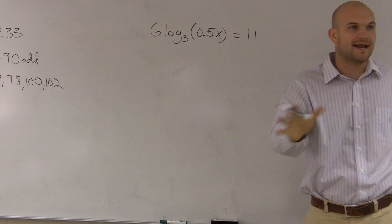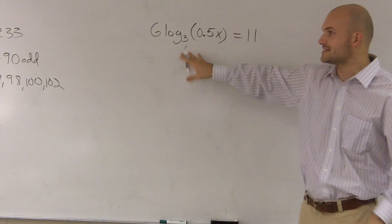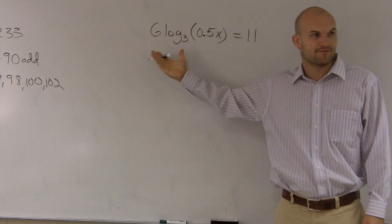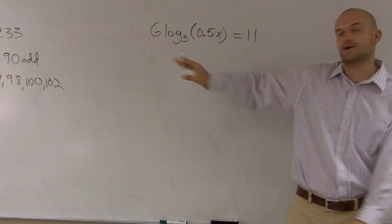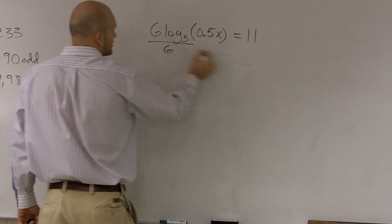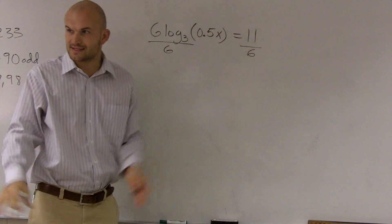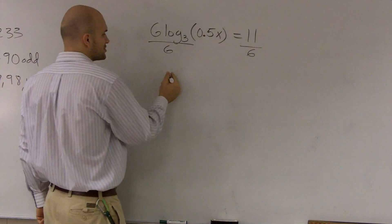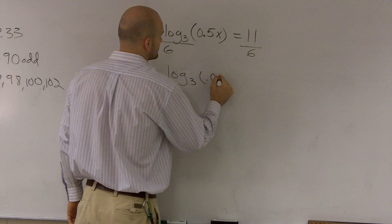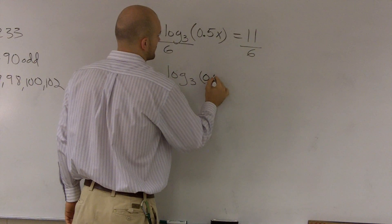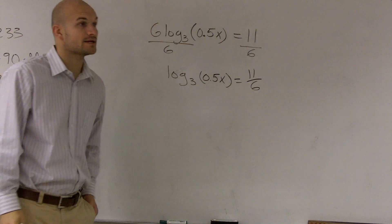So first of all, before I can even do any kind of properties, we always want to get rid of what we say, like all this extra stuff that's going on. I'm multiplying my function by 6. I can get rid of that, right? Before I start getting into logarithms, I know I can get rid of that. So I'm going to divide by 6 on both sides. And I know that's going to give us something nasty. 11 divided by 6. It's not rational, or it's not going to be an integer, but it's OK. Log base 3 of 0.5x equals 11 over 6.